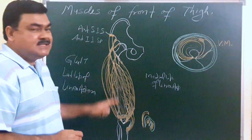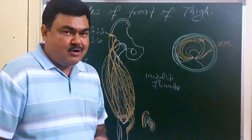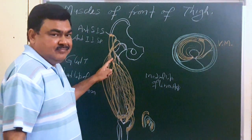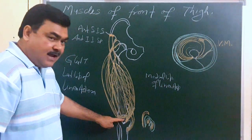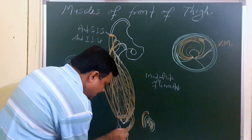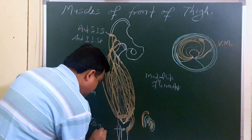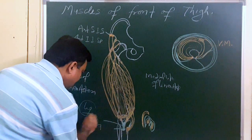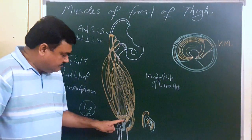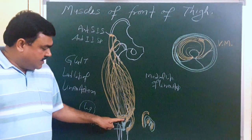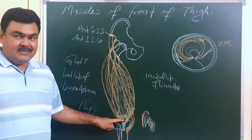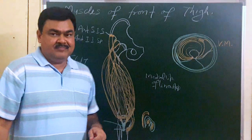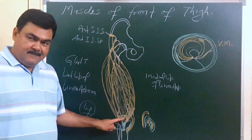The nerve supply: sartorius is supplied by the anterior division of the femoral nerve, and the rest of the muscles are supplied by the posterior division of the femoral nerve. These muscles are attached with the patella, and through the patella via the ligamentum patellae they attach to the tibial tuberosity. The patella is a sesamoid bone developed in the tendon of the quadriceps femoris. The four muscles other than sartorius are collectively known as quadriceps femoris.